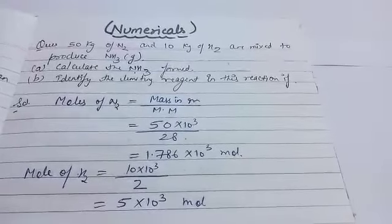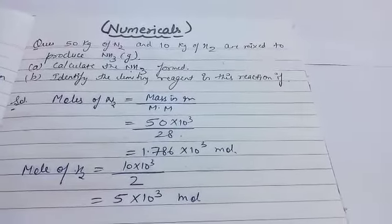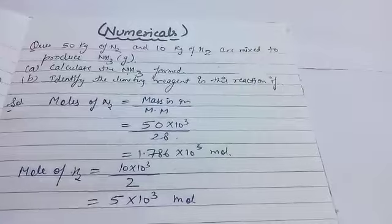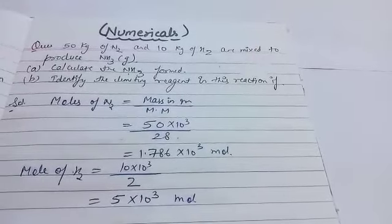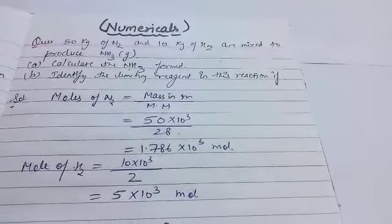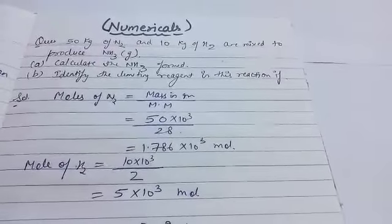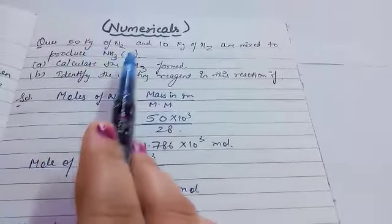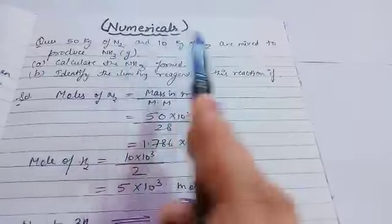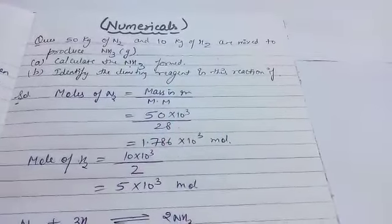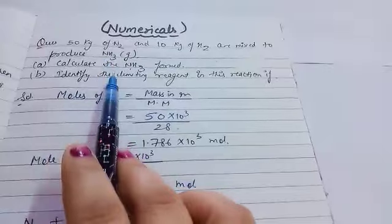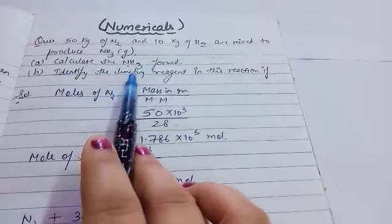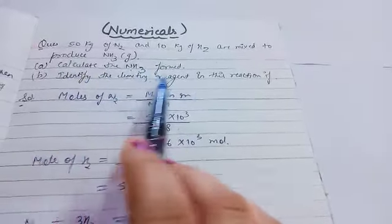Good morning, 11th class. In an earlier video we learned about limiting reagent and how to identify which one is the limiting reagent and which one is the excess reagent. Now we'll do numericals related to limiting reagent. The first question: 50 kg of N₂ and 10 kg of H₂ are mixed to produce NH₃ (ammonia). Calculate the ammonia formed and identify the limiting reagent in this reaction.